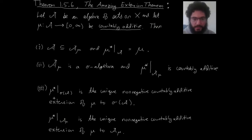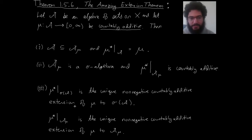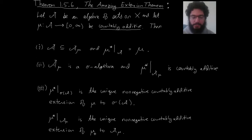Finally, when you look at mu star restricted to sigma(A) — the sigma algebra generated by A, which is smaller than A_mu — that restriction is countably additive by part two. But further, it is the unique non-negative countably additive extension of mu. Similarly, if you restrict only down to the mu-measurable sets, that is also the unique countably additive extension of mu.